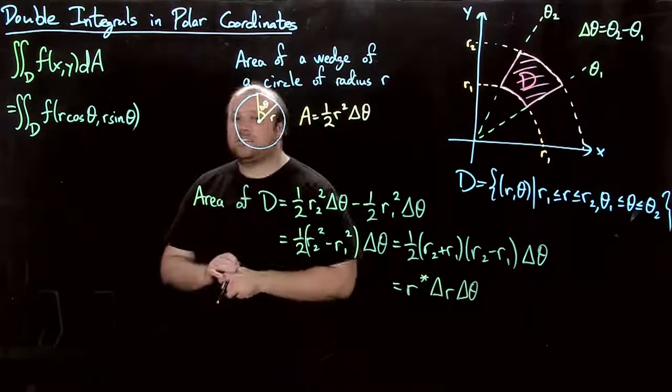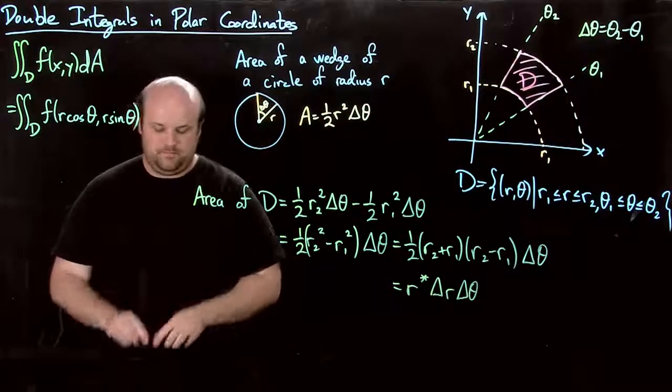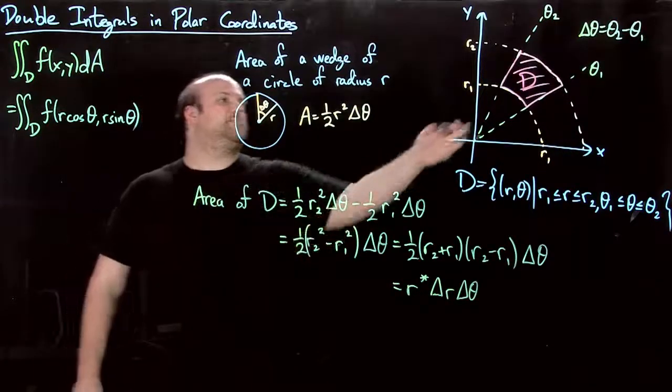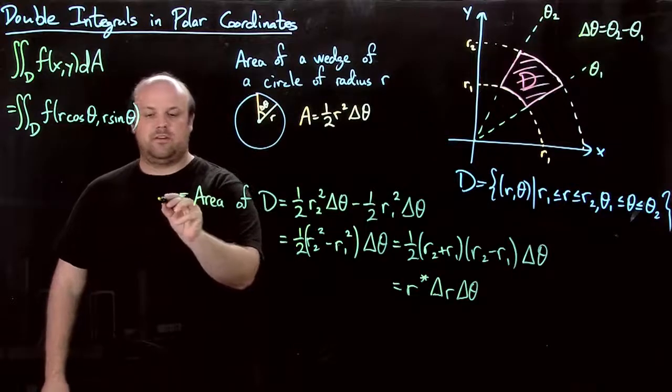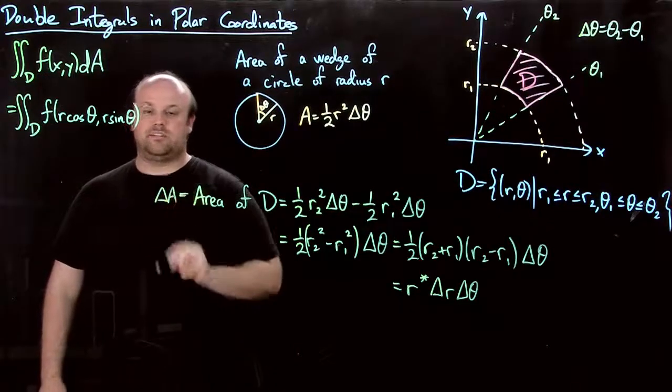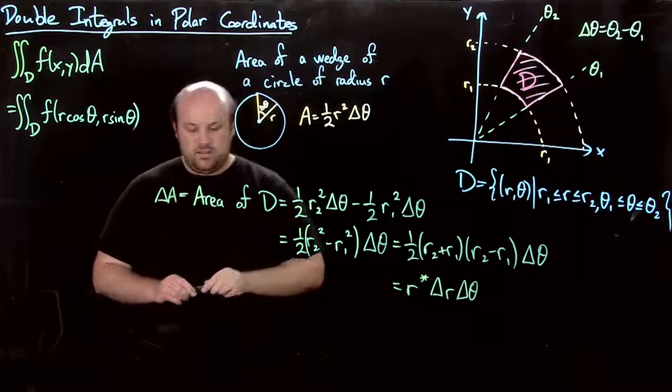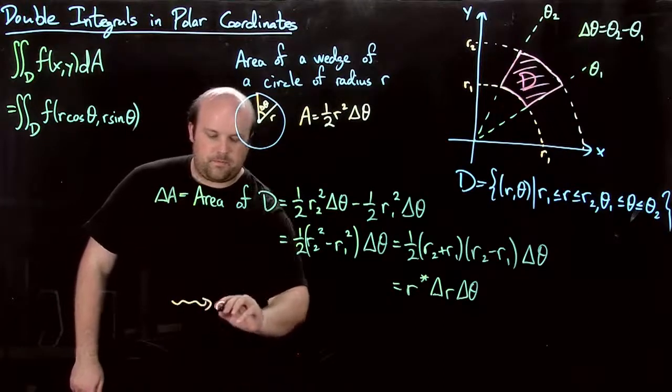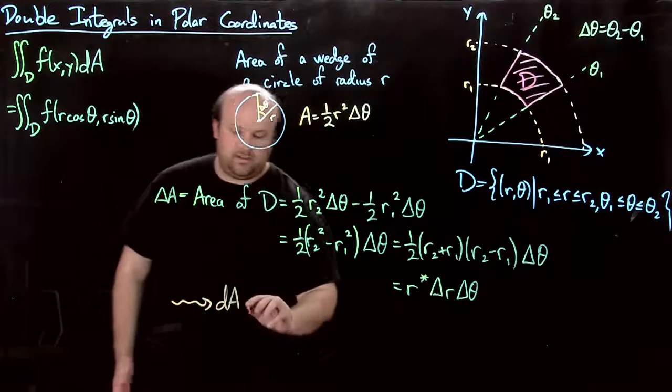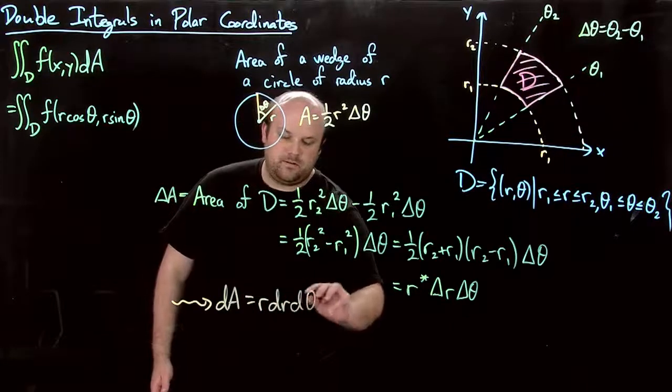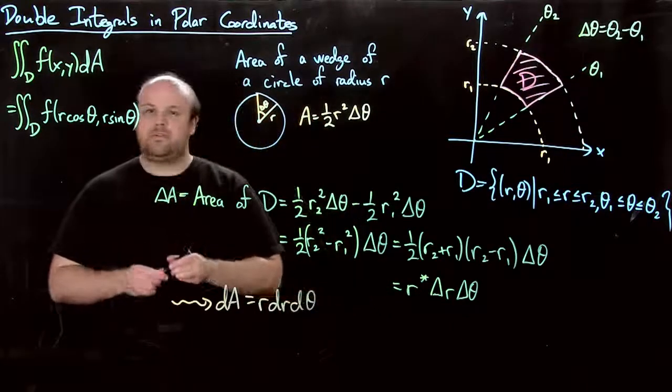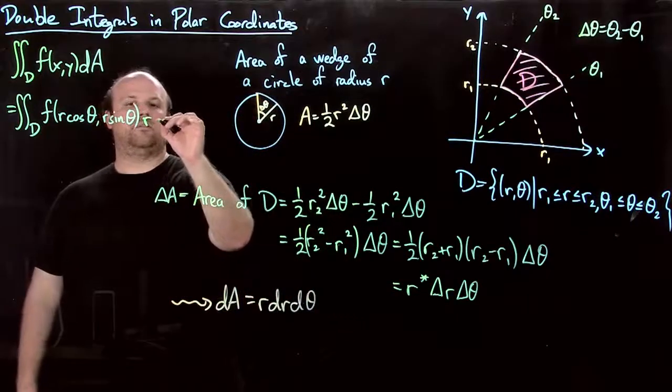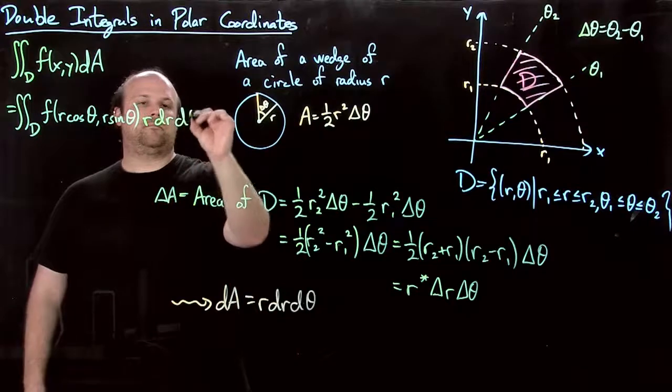Can you guess now what dA is going to become? So if you like, since this is one of the small rectangles that we're going to integrate over, you could call this delta A. So then dA ends up being just r dr d theta. And that's what comes up here, r dr d theta.